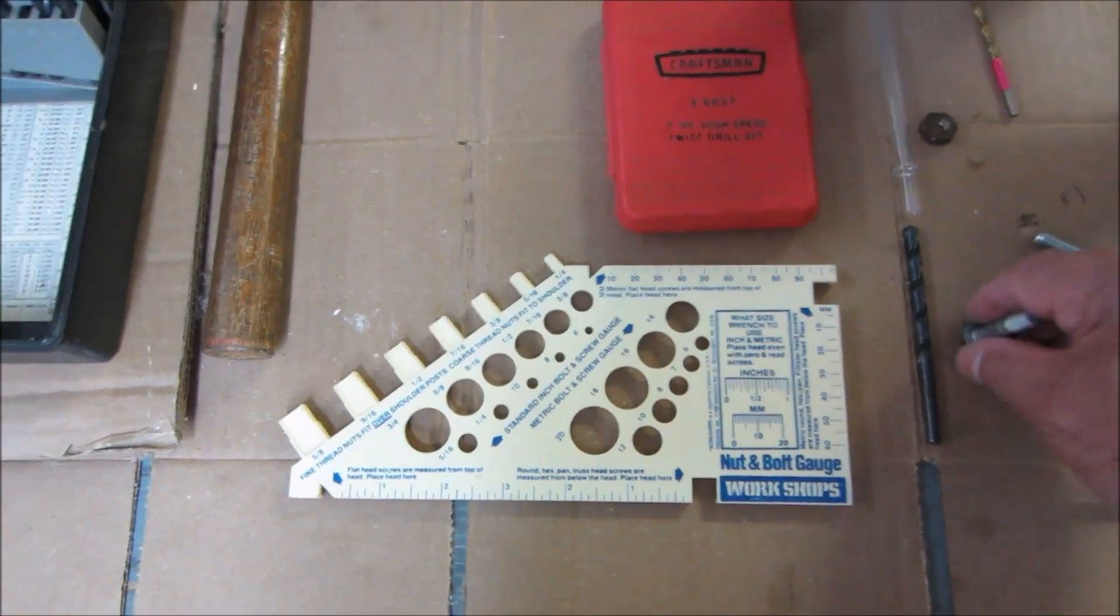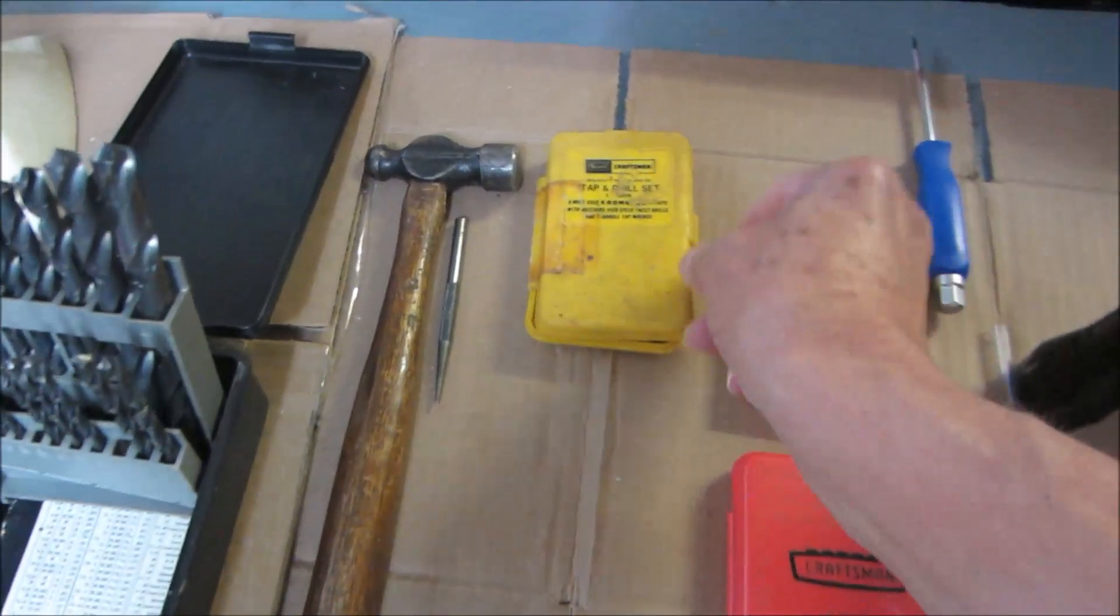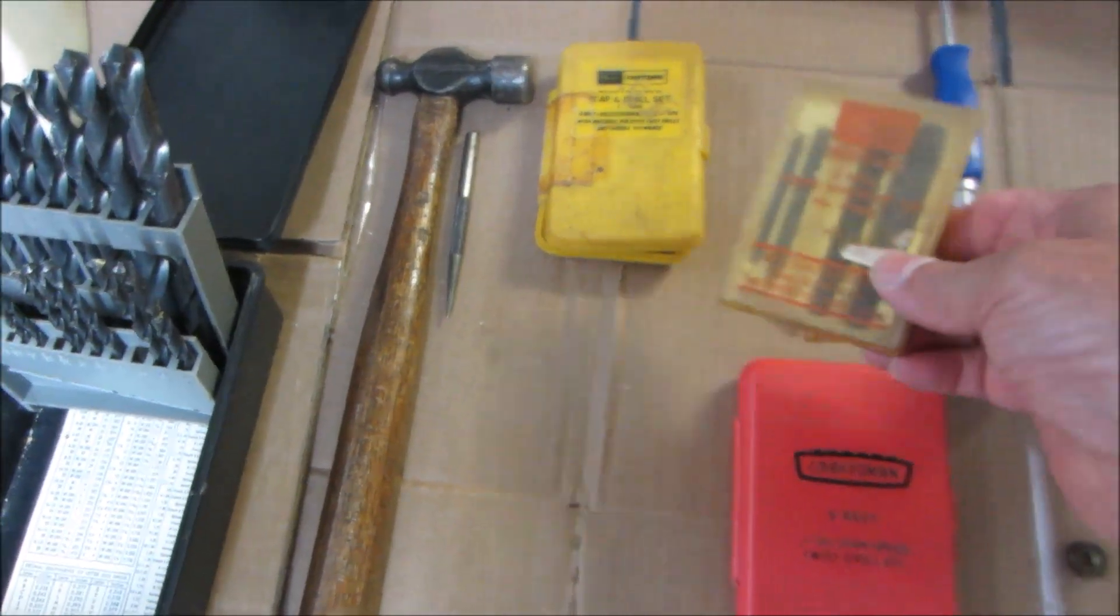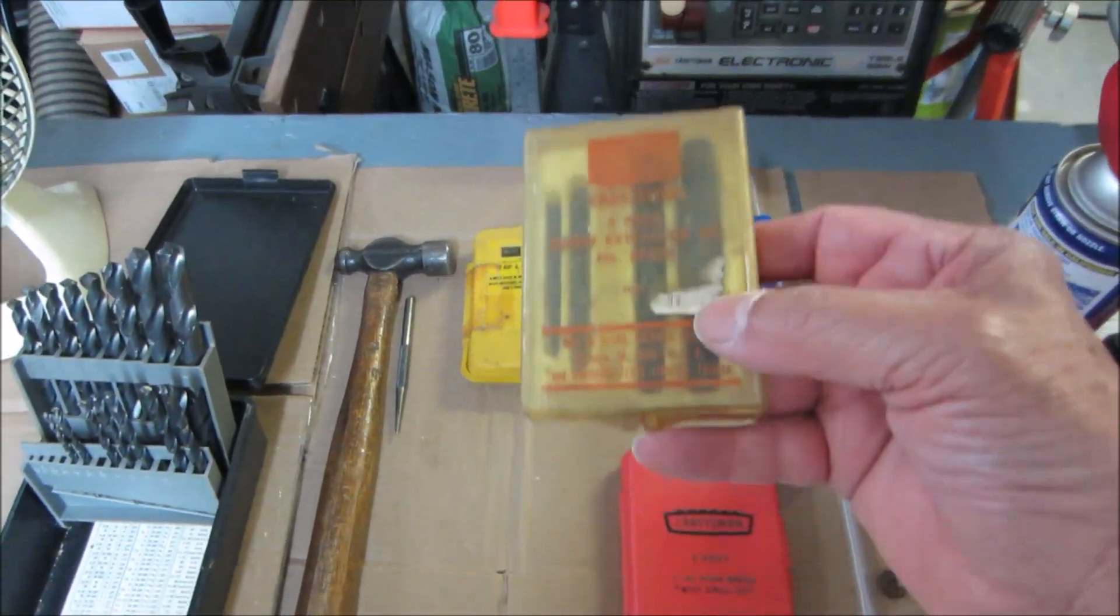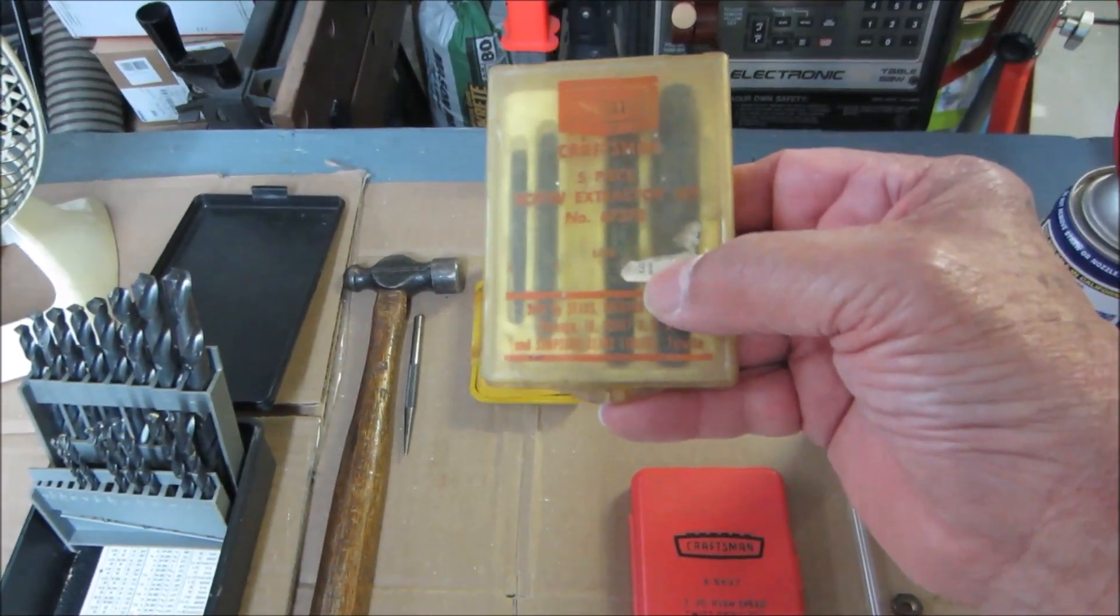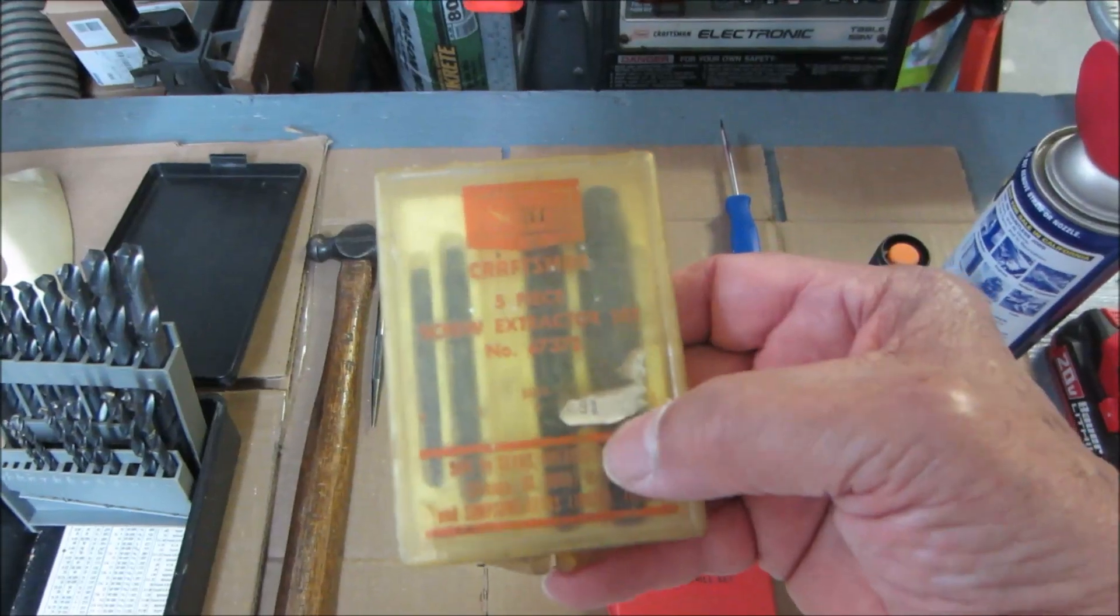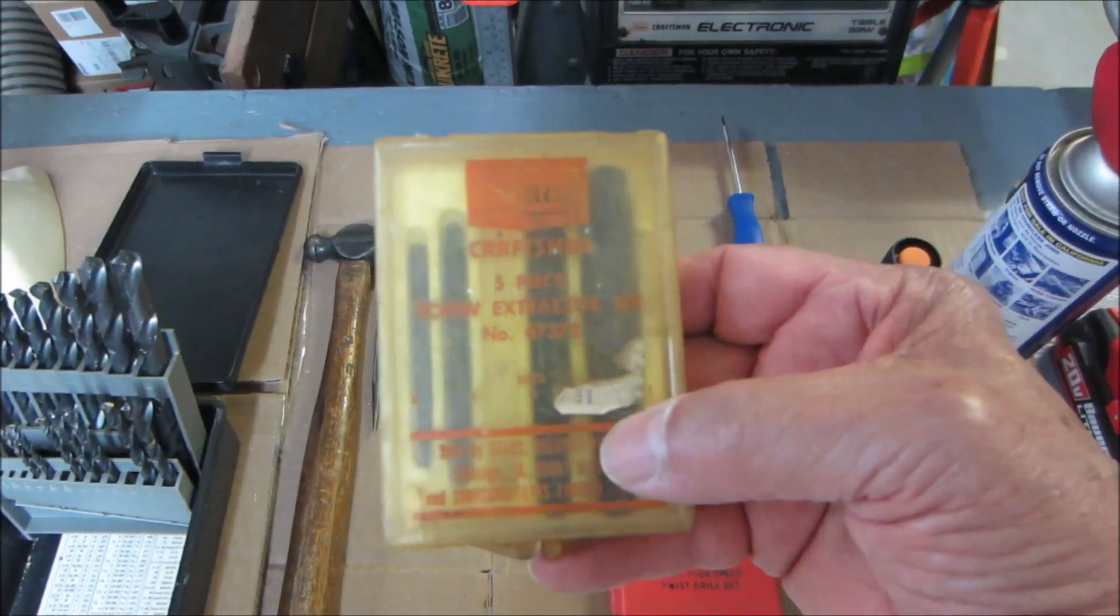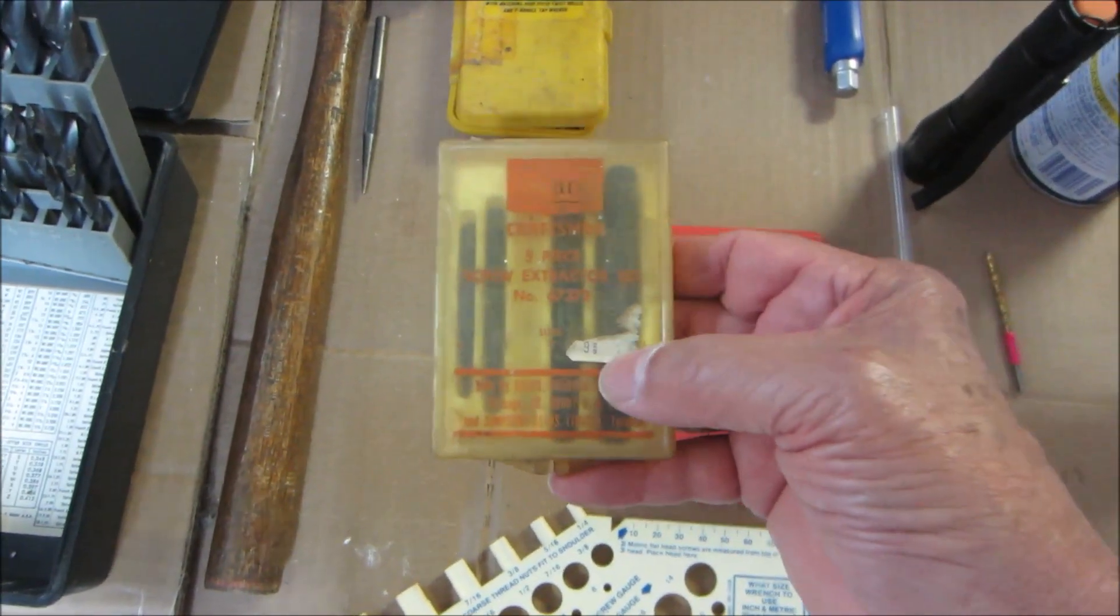Okay now I'm going to try to get it out with easy outs. Here's a kit of Sears easy outs that I bought probably fifty years ago. The price tag on that hat said two dollars and forty-nine cents. I have tried to use this many times. I've never been successful until just now.